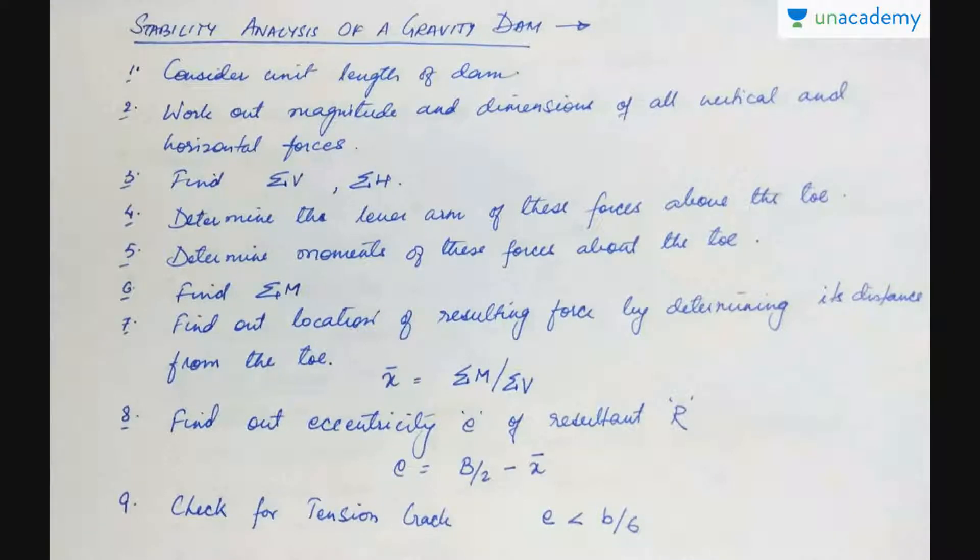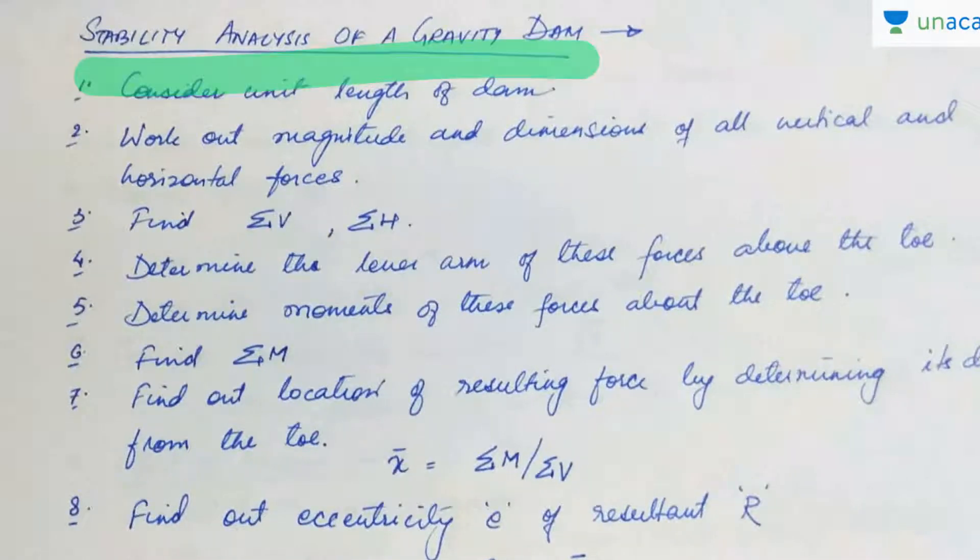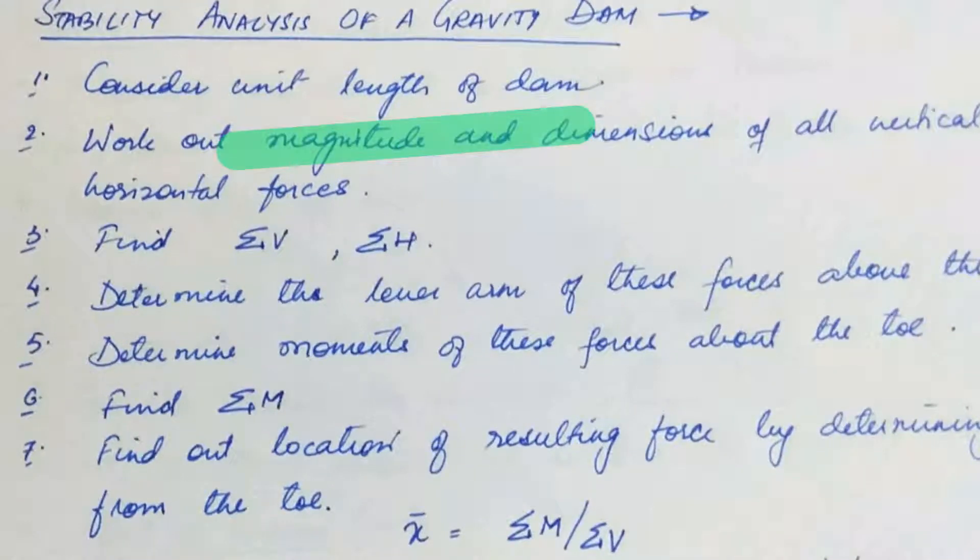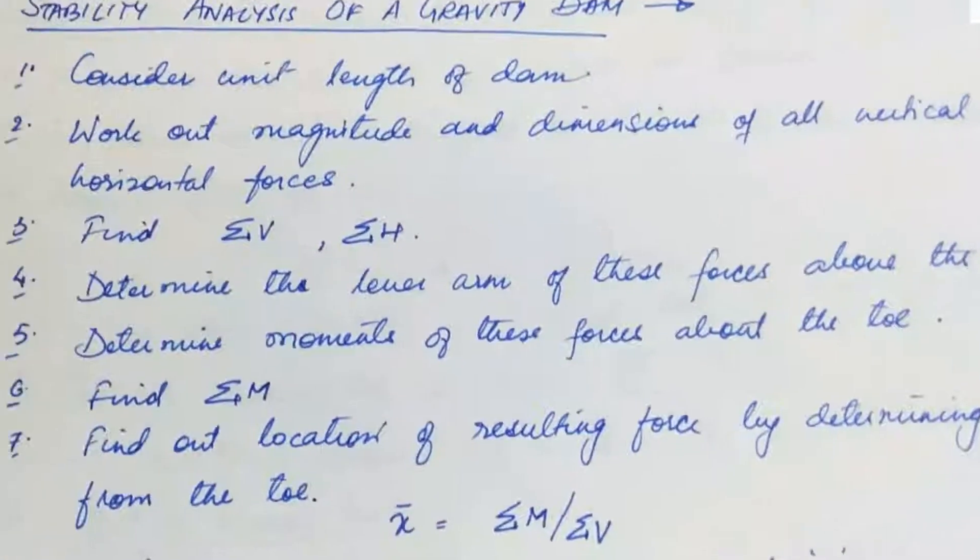Now, if you need to carry out the stability analysis of gravity dam, I have written here in the point-wise steps that you should follow. First, consider unit length of dam. Second step, work out the magnitude and dimensions of all vertical and horizontal forces. Third step, find sigma phi, sigma total vertical forces and sigma h, the total horizontal forces. Fourth step, determine the lever arm of these forces above the toe.